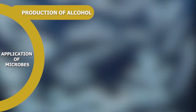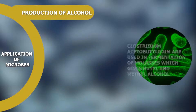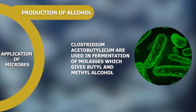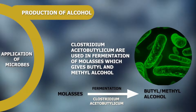Production of Alcohol: Butyl and methyl alcohols are prepared from molasses by the fermentation activity of the bacteria Clostridium acetobutylicum. Yeast, a fungi, is also used in producing alcohol and wine.